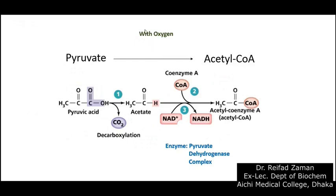So now let us see what happens with oxygen. The 3-carbon pyruvate is converted into 2-carbon acetyl-CoA, or acetyl-coenzyme A. This reaction takes place in several phases. First, the 3-carbon pyruvic acid releases carbon dioxide and thus becomes the 2-carbon acetate. Then a coenzyme A is added to the acetate to form a complex. Finally, the acetate complex loses a hydrogen, which originally belonged to the pyruvate, to form a molecule of NADH and most importantly a molecule of acetyl-CoA. The enzyme for this reaction is called the pyruvate dehydrogenase complex, since NADH is being produced and the hydrogen is actually being lost from the pyruvic acid.